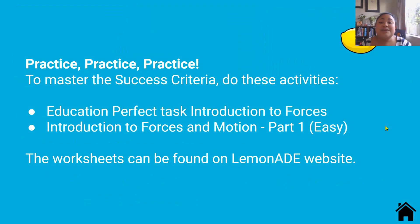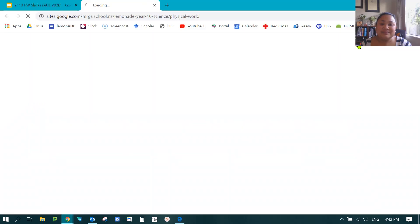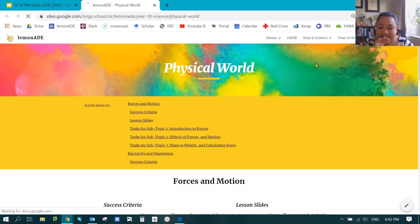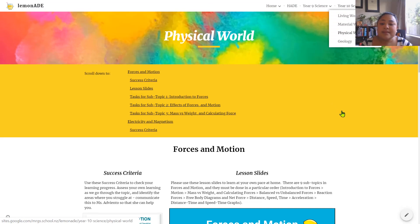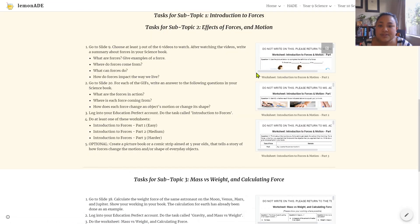The next activities for you to do is to go on Education Perfect and do the task called Introduction to Forces. Then do the worksheet called Introduction to Forces and Motion Part One. And this one's a pretty easy worksheet. This lemon here is a shortcut to Lemonade. You can also get to Lemonade through the Google Classroom website. So this is Lemonade and this is found under Year 10 Science under Physical World. If you scroll down or if you click here, these are your activities to do. And these are the worksheets that you can click on.